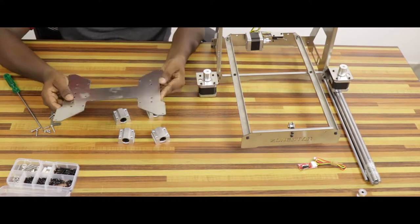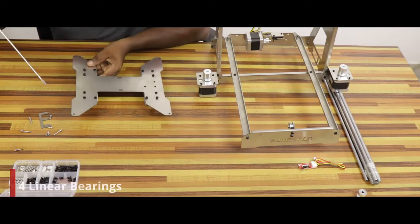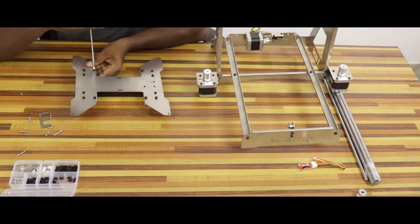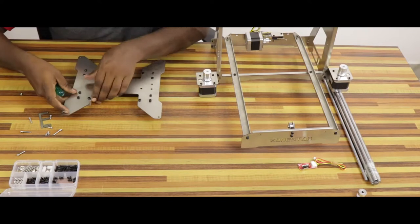Let's prepare the heat bed bracket assembly. First, attach four linear bearings using four pairs of three M4 6mm screws to the heat bed bracket.